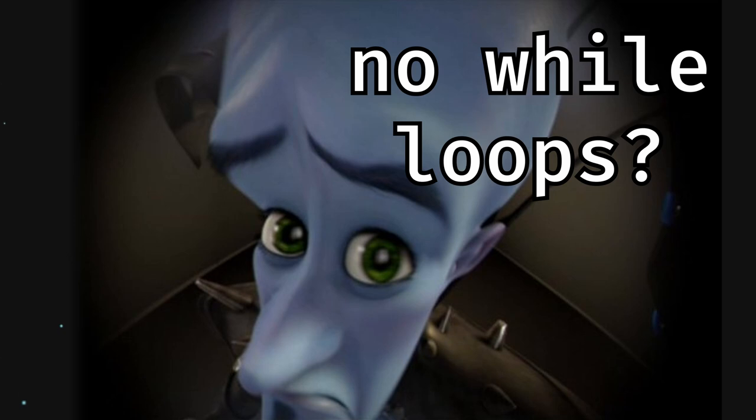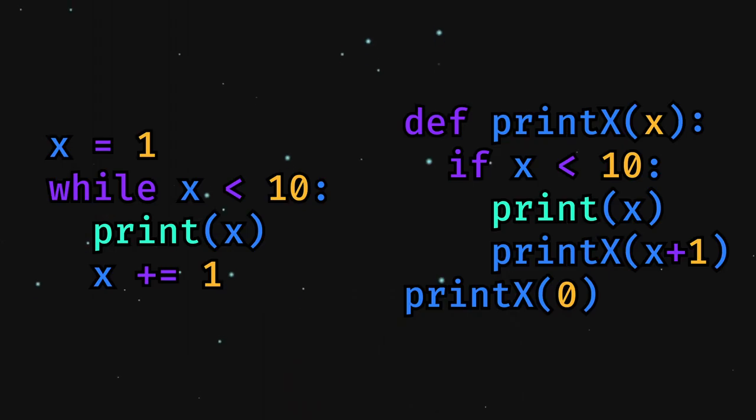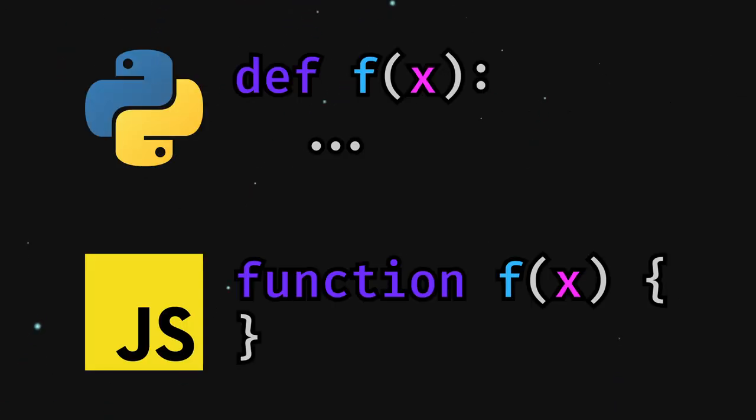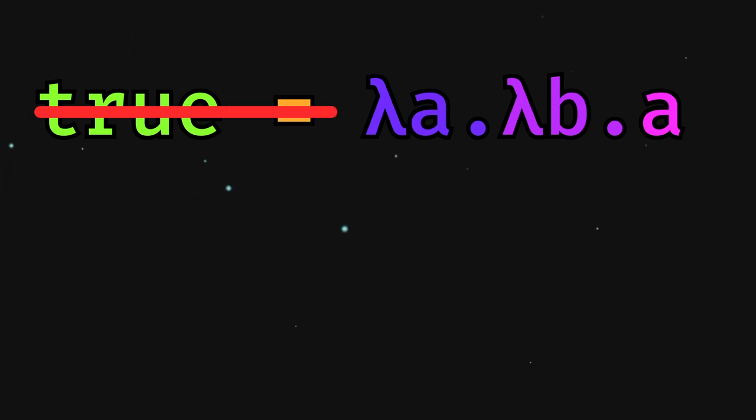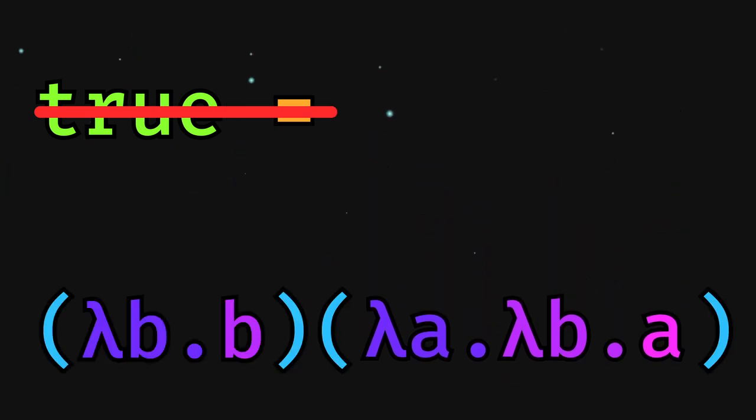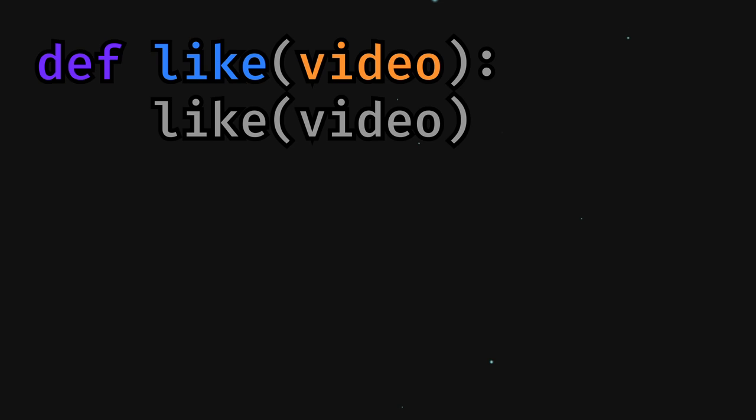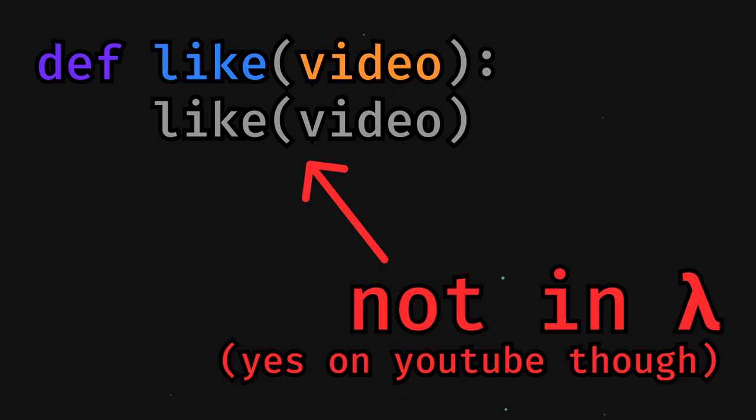That is not a feature of Lambda Calculus, so instead we can simulate them by using recursion, which is the process of a function calling itself. In most languages, defining a function assigns it to a variable which can be referenced from within the function. In Lambda, functions are simply values and cannot be assigned, just passed as arguments to other functions. This means that conventional recursion is made impossible.